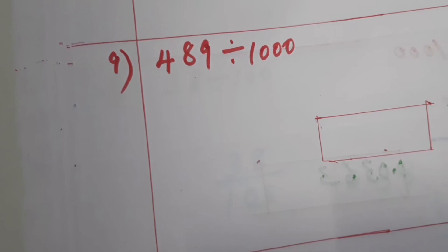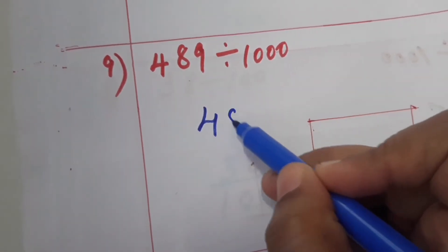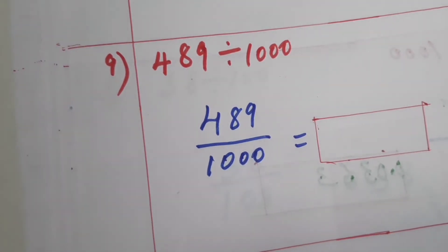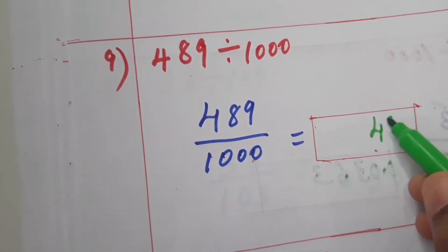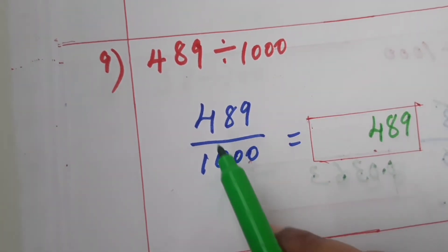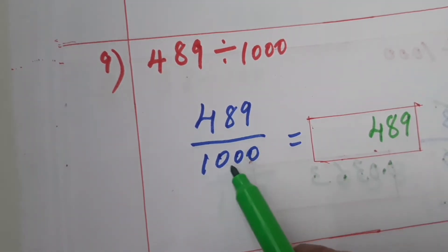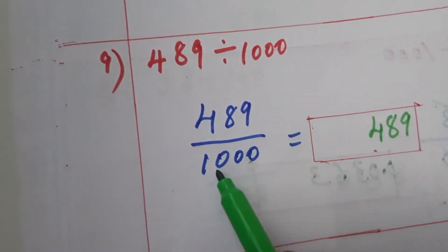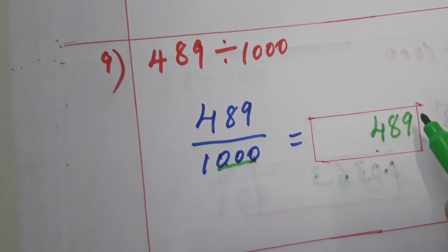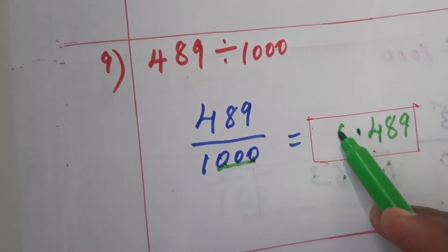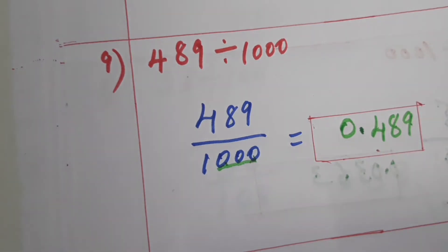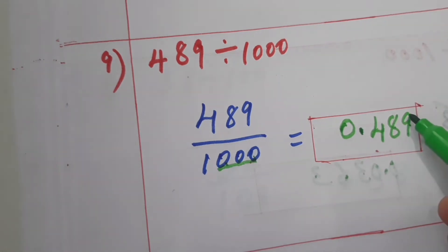Now the next question: 489 divided by 1000. Write it as 489 by 1000. There is no decimal point in the numerator, so no need to count numerator digits. Count only the zeros in the denominator — one, two, three zeros. After three digits from the right, counting from the right side, place the decimal point.